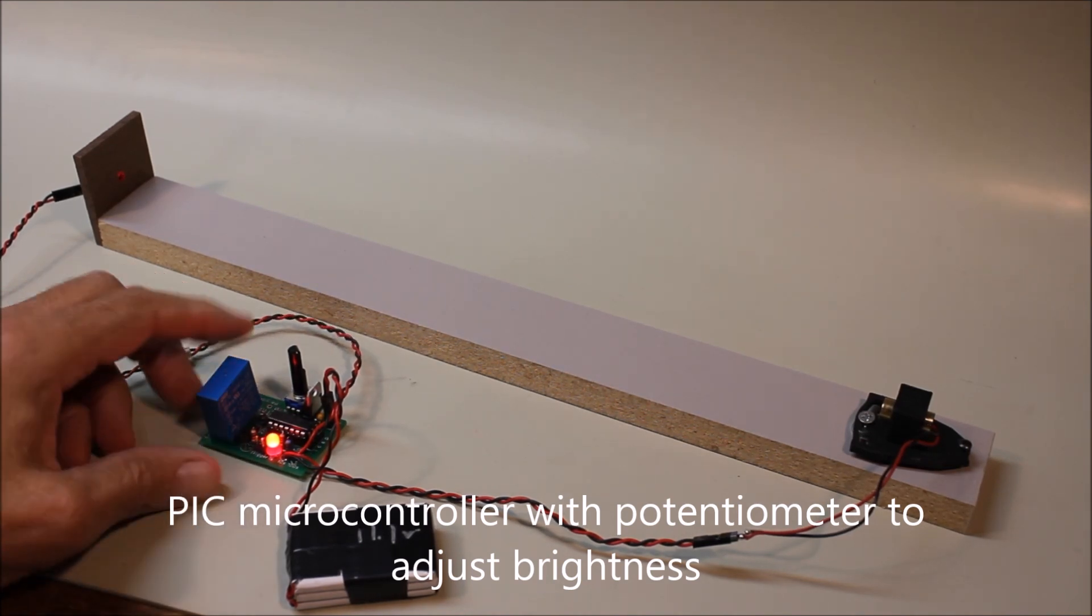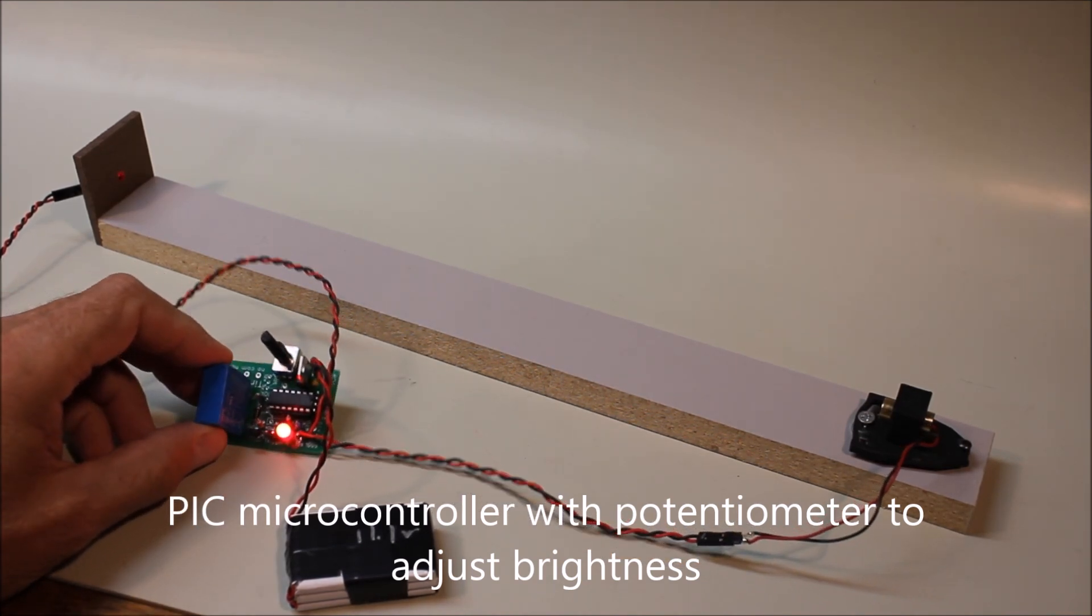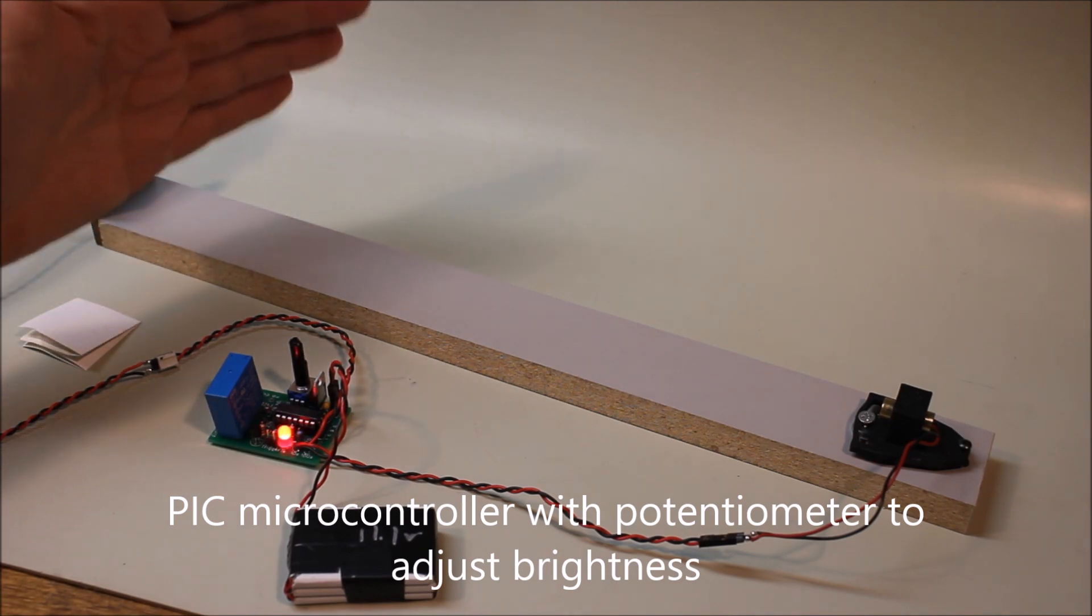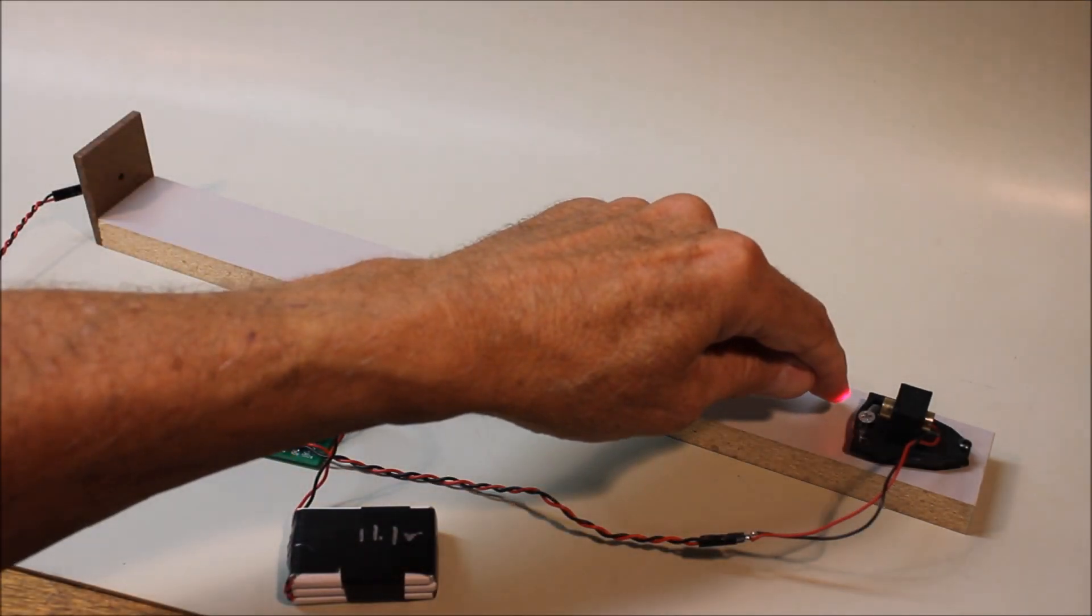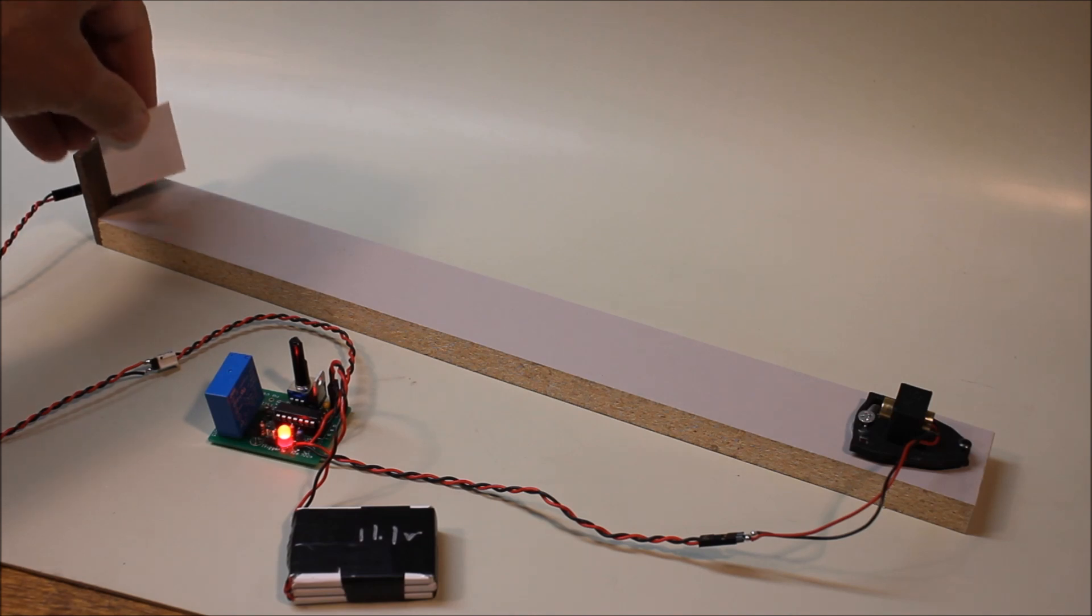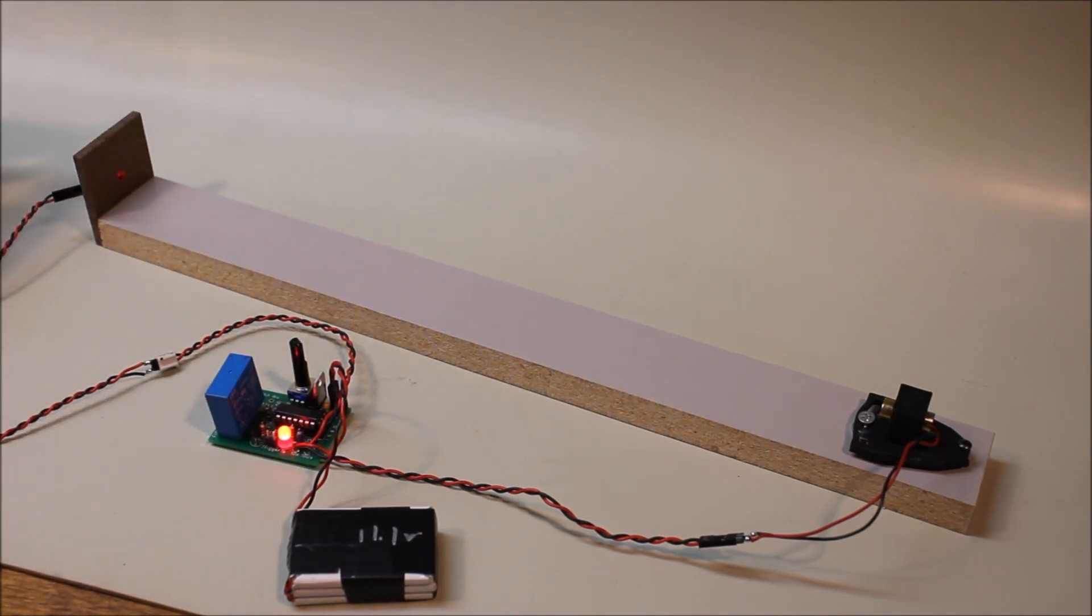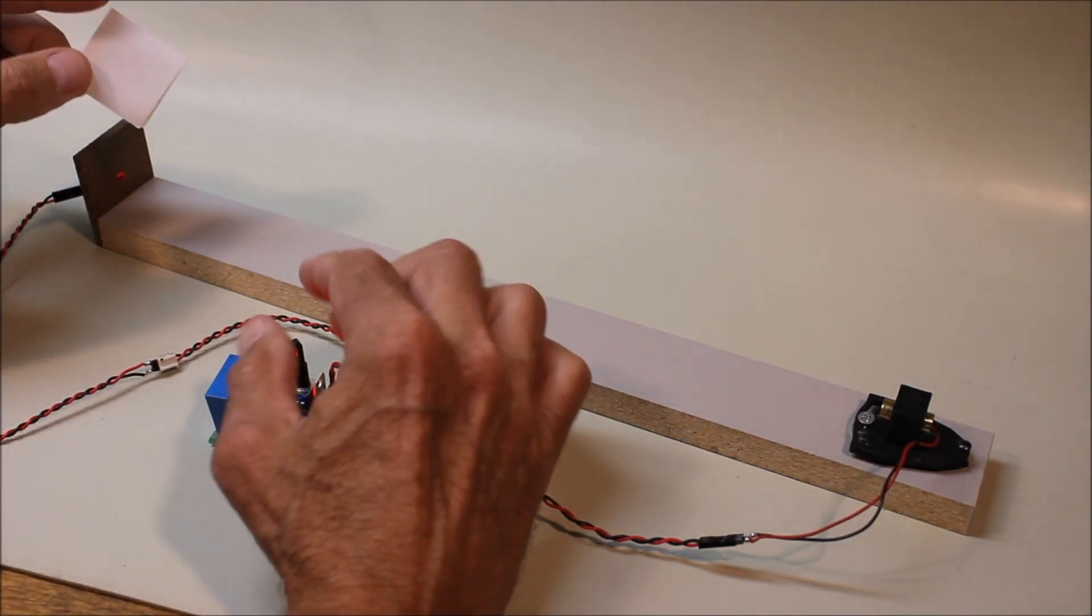This time we're using the PIC processor again and there's a direct beam between the laser and the phototransistor that's down here. Again, you can see the beam quite clearly. But this time we've added a potentiometer, also called a pot, to the circuit.